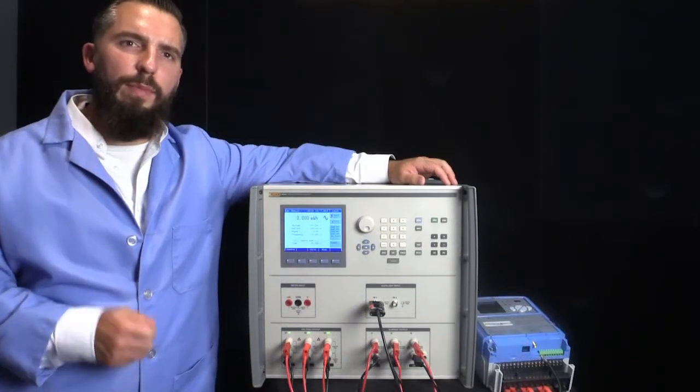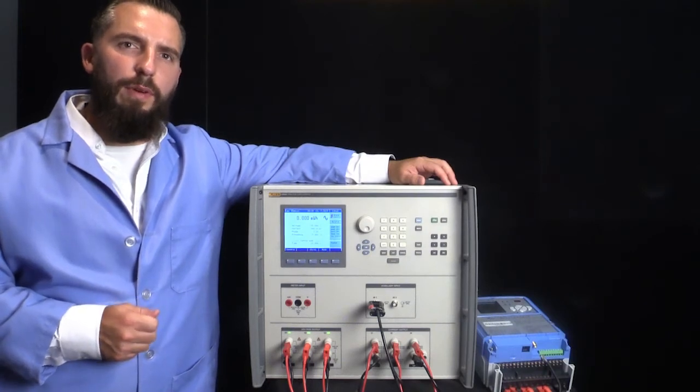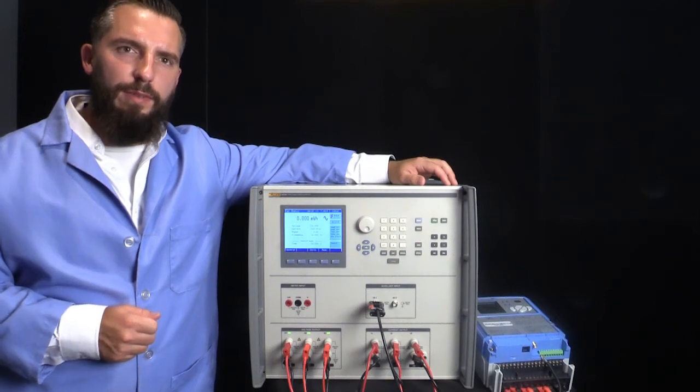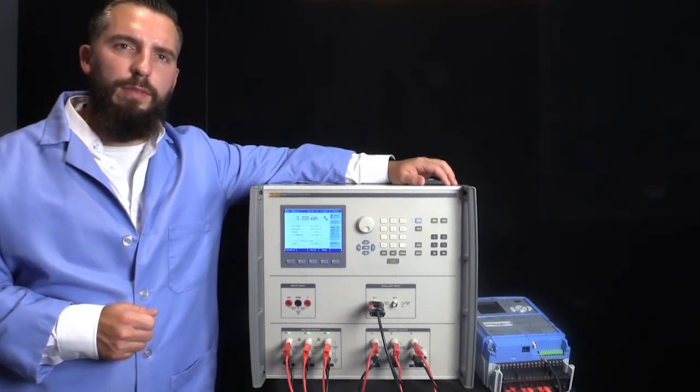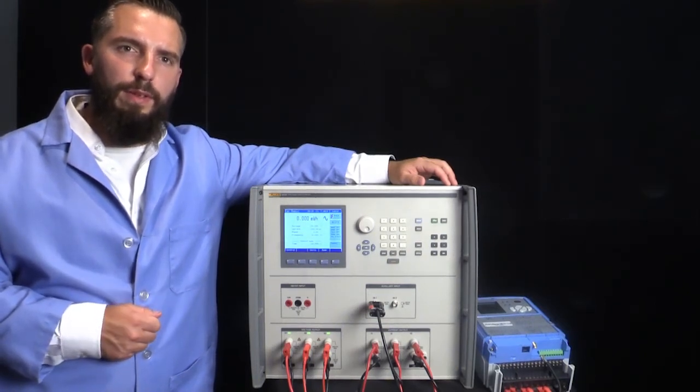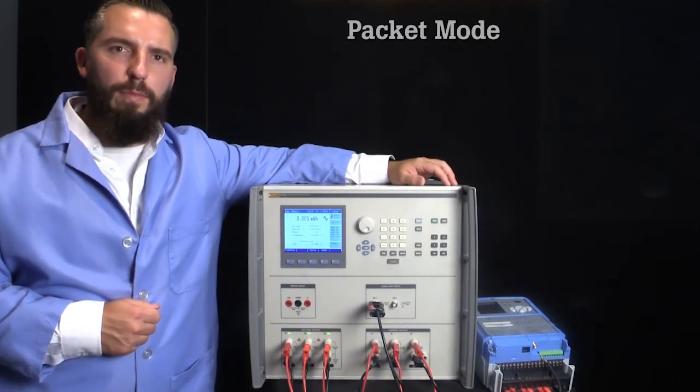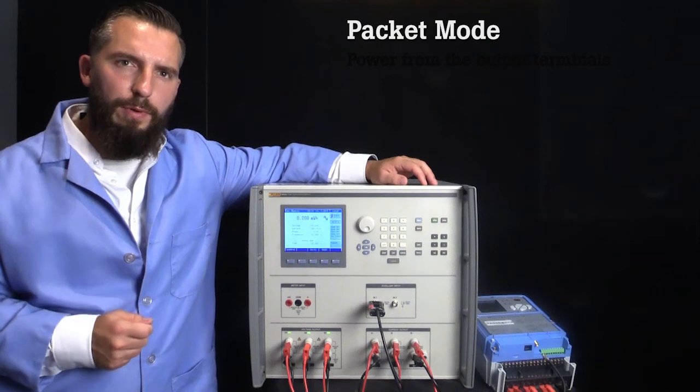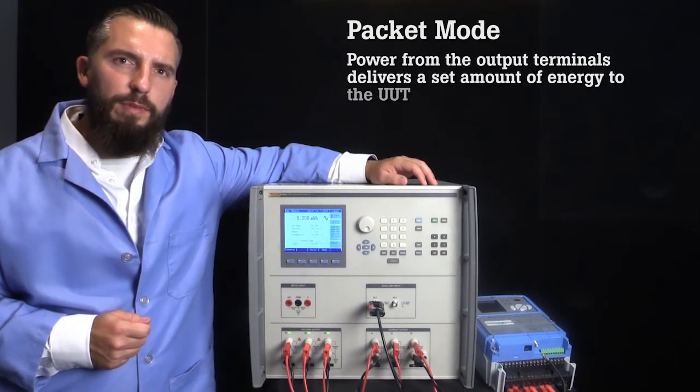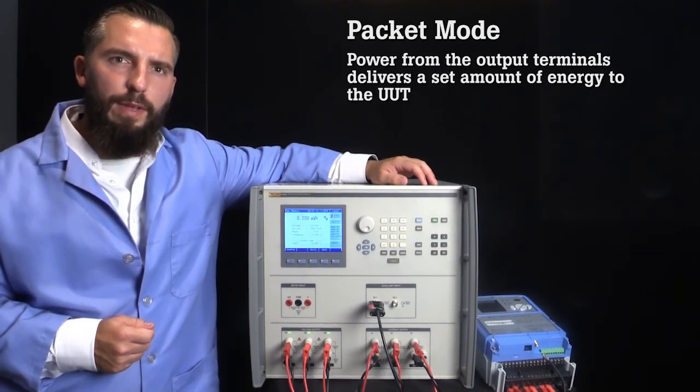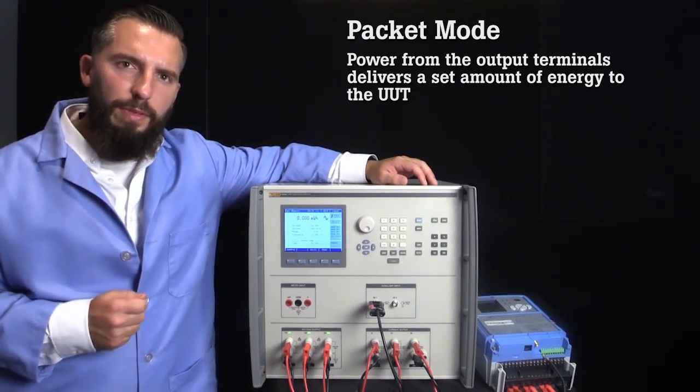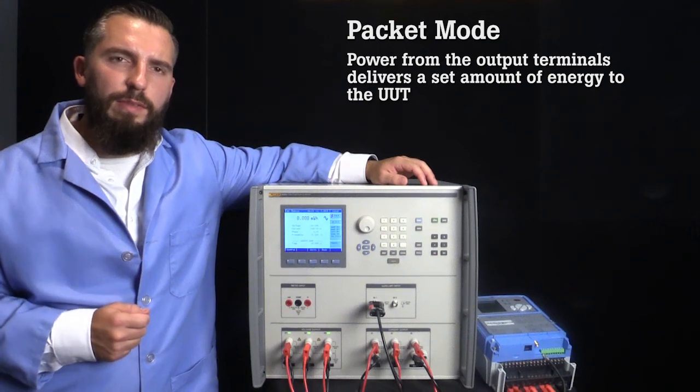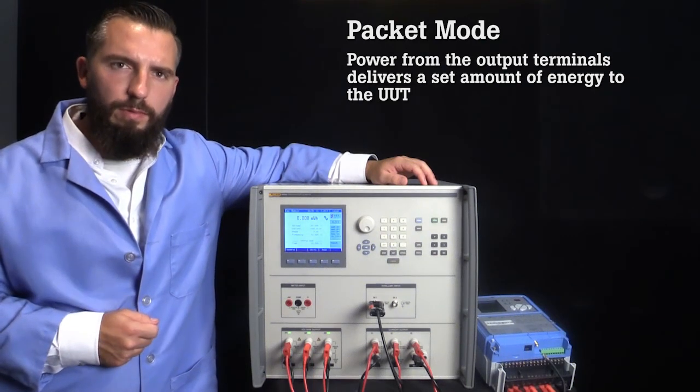In some cases, you may have to test an energy meter without a pulse output. In this case, the simplest method is to do a timed energy test where you compare the expected value to the measured value on the energy meter. This can be done using the packet mode. In packet mode, which is also known as dose mode, the power from the output terminals is timed to deliver a set amount of energy to the meter under test. This method is not as accurate as the other methods because the startup time of the 6003A is not synchronized with the UUT, but it is the simplest.